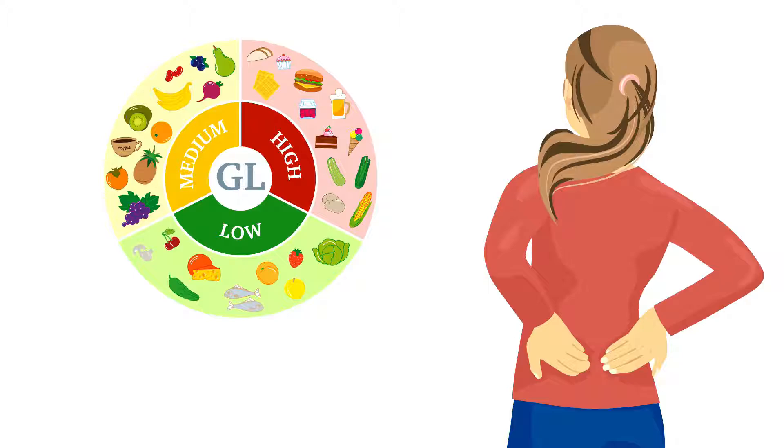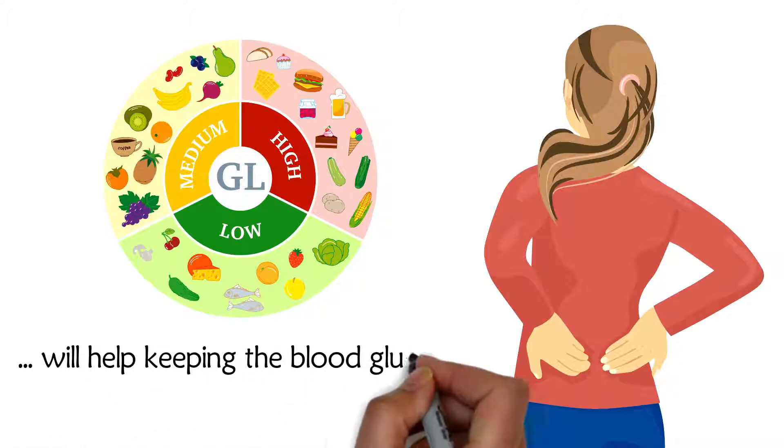A high-nutrient, low-glycemic index diet will help, keeping the blood glucose in a low, normal range.